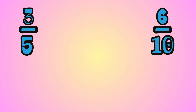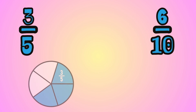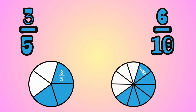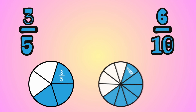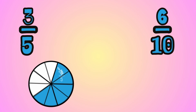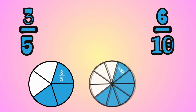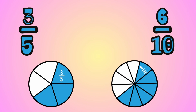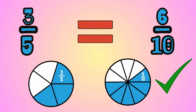Here we have these two fractions: 3 fifths and 6 tenths. The first fraction — here we have the model for 3 fifths. And the second fraction — here we have the model for 6 tenths. Let's see if these two fractions are equivalent. Yes! Very good! As you can see, these two models have the same amount shaded, so they represent the same value. That's why they are equivalent fractions.